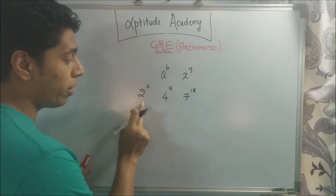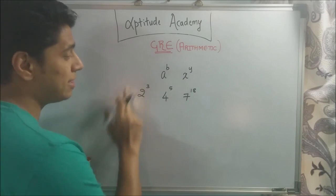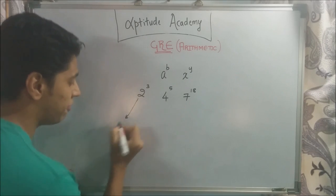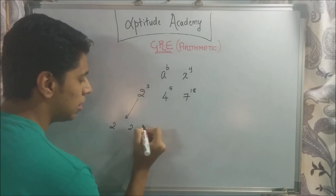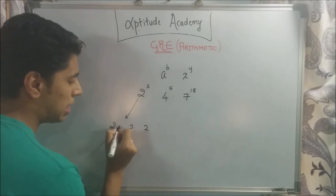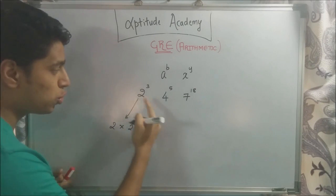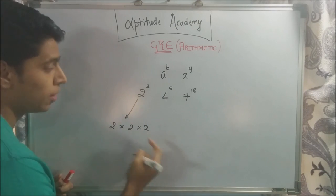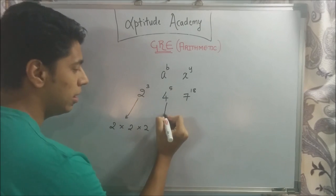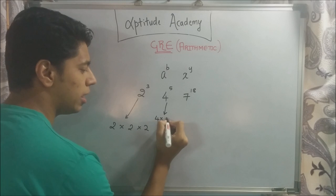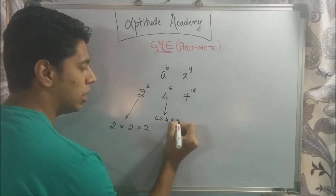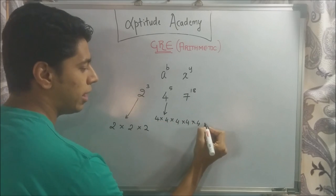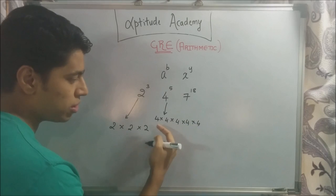What you need to know here is what they're called and what this really means. This basically means that you have three 2s and they're all multiplied into each other. So 2 raised to 3 is equal to 2 into 2 into 2. Similarly, 4 raised to 5 is 4 into 4 into 4 into 4 into 4. So 5 times you will multiply.